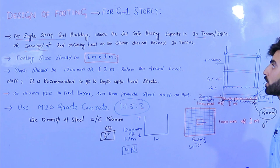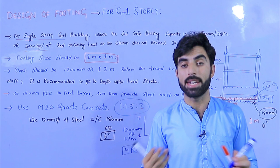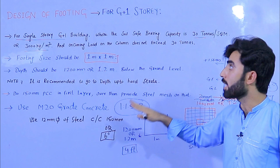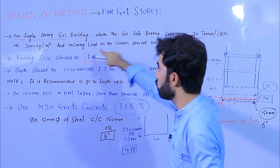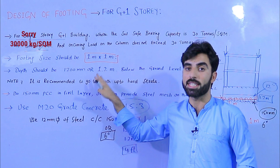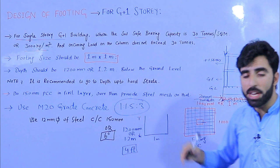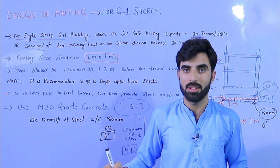This is the important and basic civil site engineer practical knowledge I have discussed. If you don't have a structural design or are not a technical civil engineering person, you can use this same design for G plus one story footing. Remember: if the bearing capacity of the soil is lower than 30 tons per square meter or 3,000 kg per square meter, we will change the design — increase the depth, increase the footing size, and adjust the steel reinforcement details.